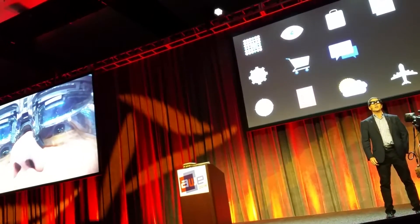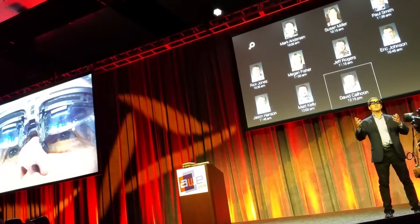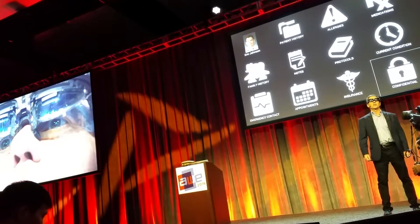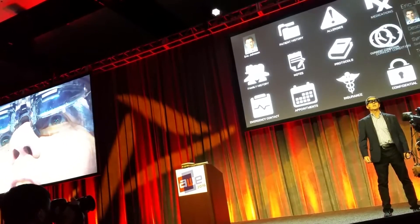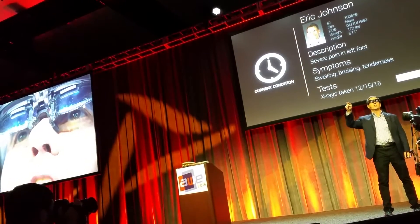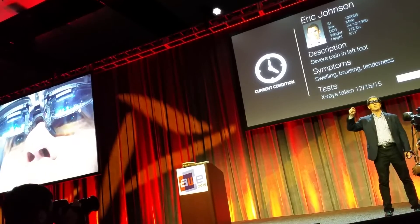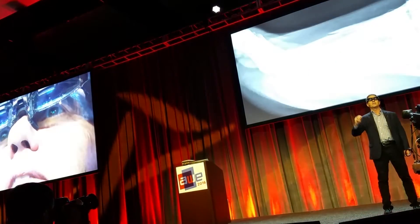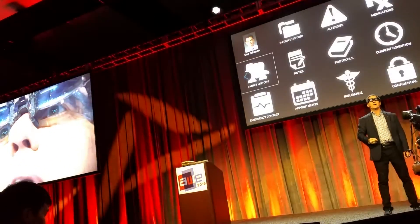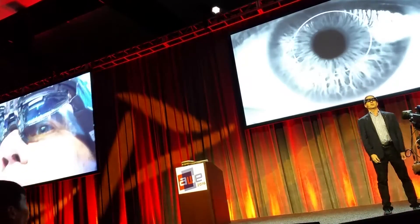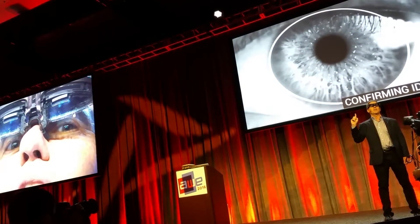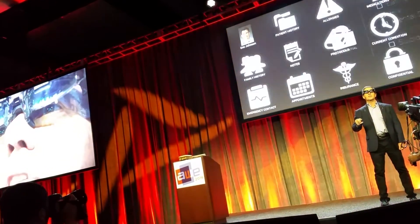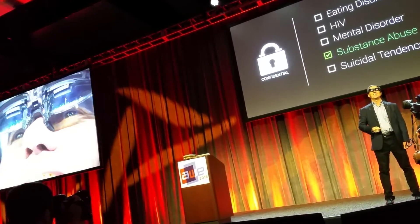So let's try a couple other things. We've got social, enterprise, consumer. In this case I'm a doctor and I want to be hands-free. So there's Eric, and I want to check out Eric's charts. Protocols, insurance, confidential information. There's current conditions — I'm reading right now: Eric Johnson, ID 10668, description, severe pain, left foot. He had a test done with an X-ray. Let's take a look at that X-ray — he had a bad break. Now, back to the confidential information: if it's confidential, it's going to take a picture of my eye, because my iris is a better identifier than my fingerprint. It validates that it's me and says okay, it's Jim, give him access — and finds out that Eric had a substance abuse problem.